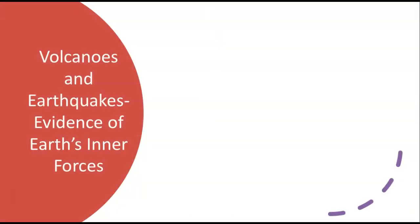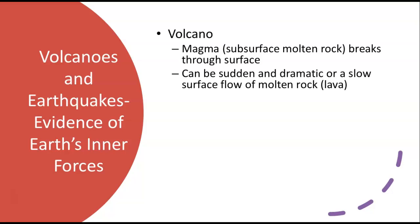Volcanoes and earthquakes are evidence of Earth's inner forces. Magma is the subsurface molten rock. A volcano erupting happens when that magma breaks through the surface — it can be sudden and dramatic, or it can be the slow surface flow of molten rock called lava. What's the difference between magma and lava? Magma is underground, lava is above ground. They're technically the same material — it's just the term scientists use depending on whether it's above or below ground.